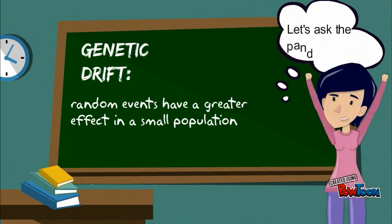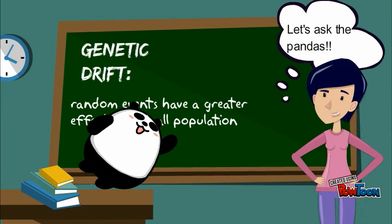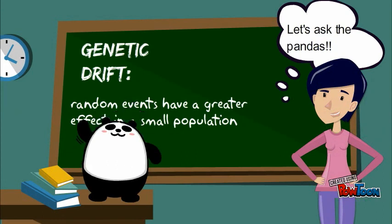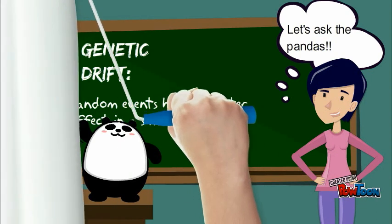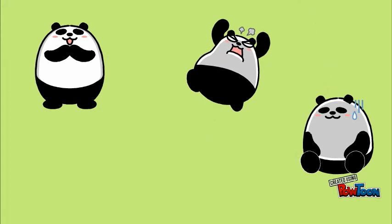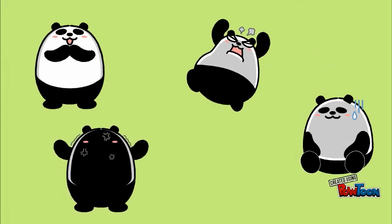Let's take an imaginary variety of panda that has four different genotypes, causing four different genetic traits that we can see. We have our normal happy panda, a panda who has a different metabolism and easily overheats, a grumpy panda, and a mysterious dark panda.